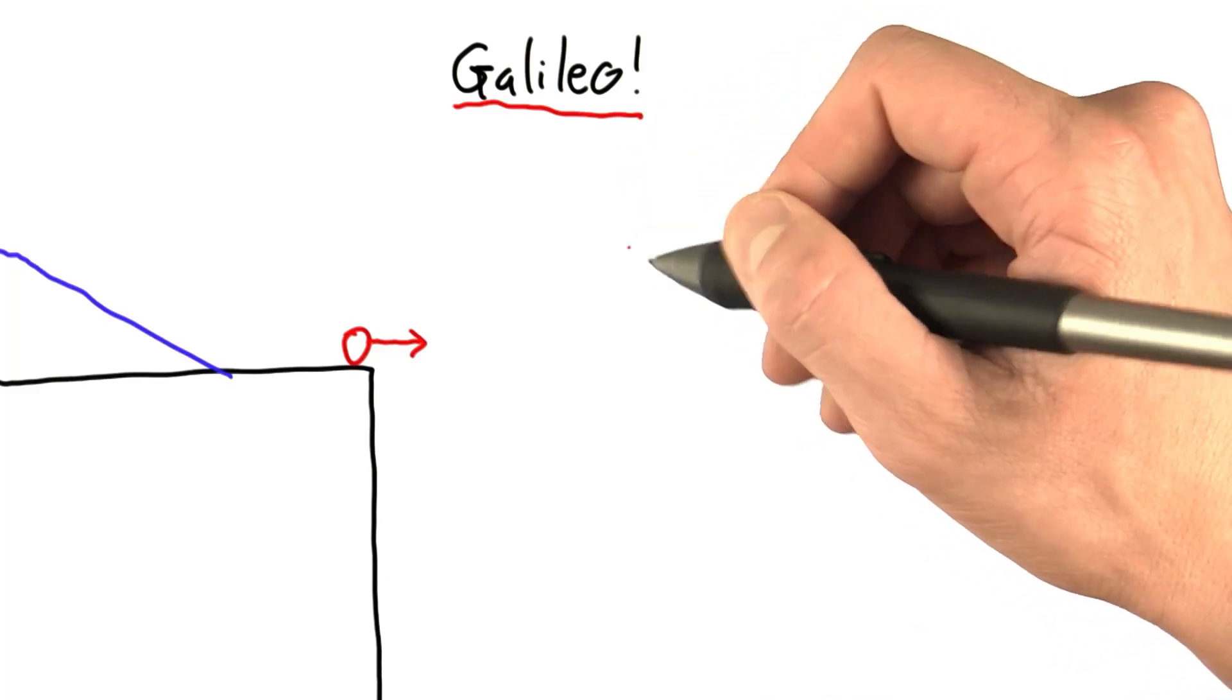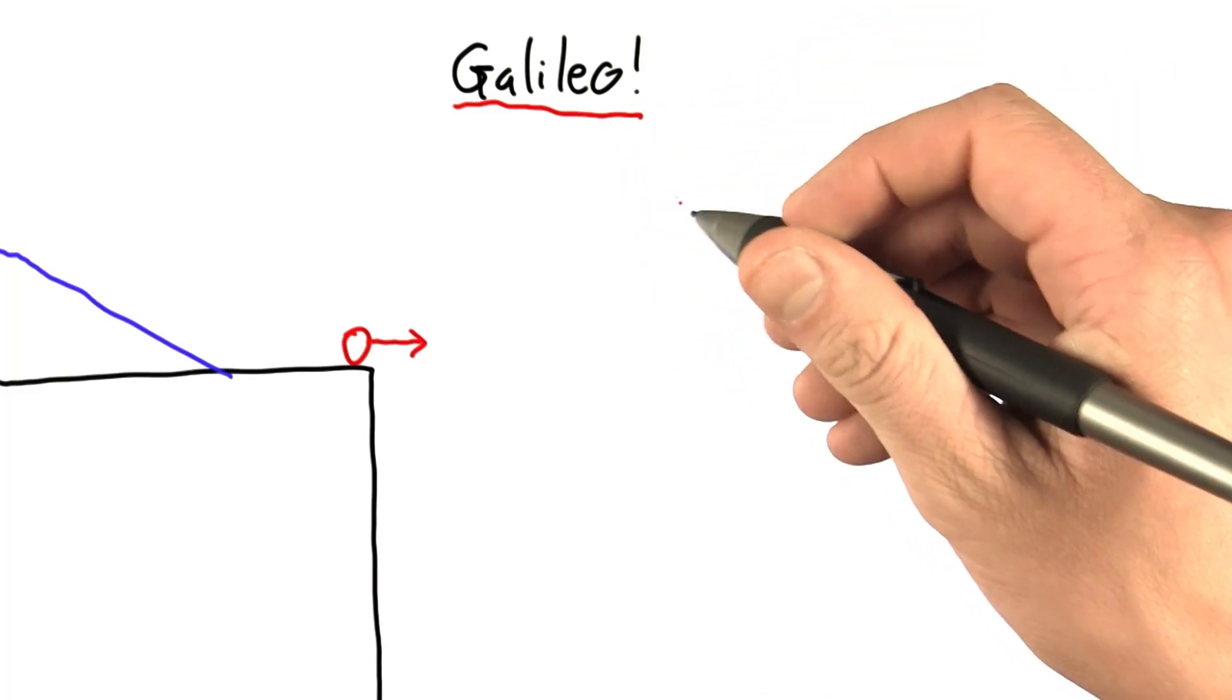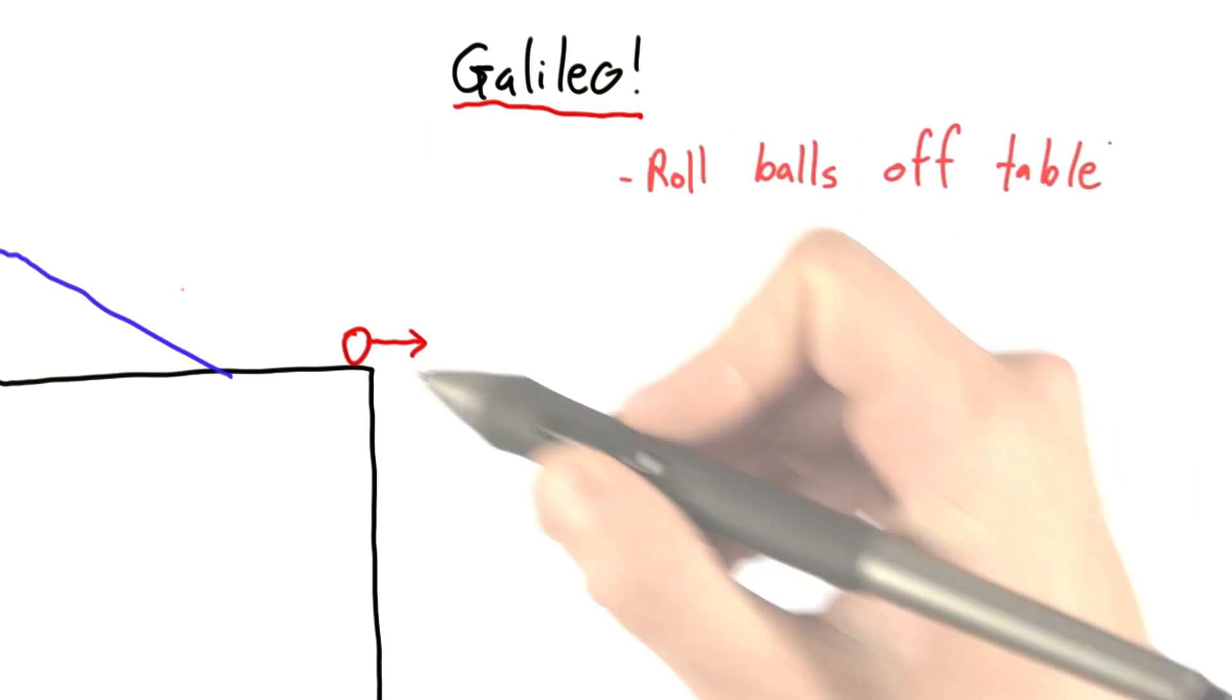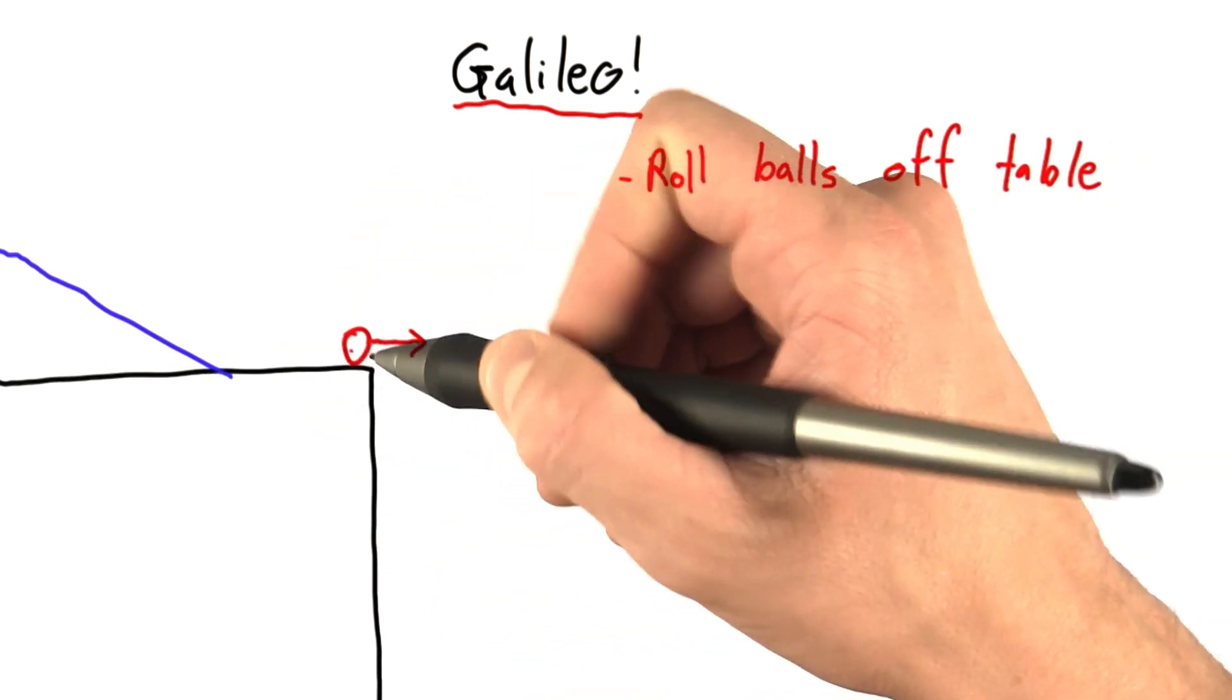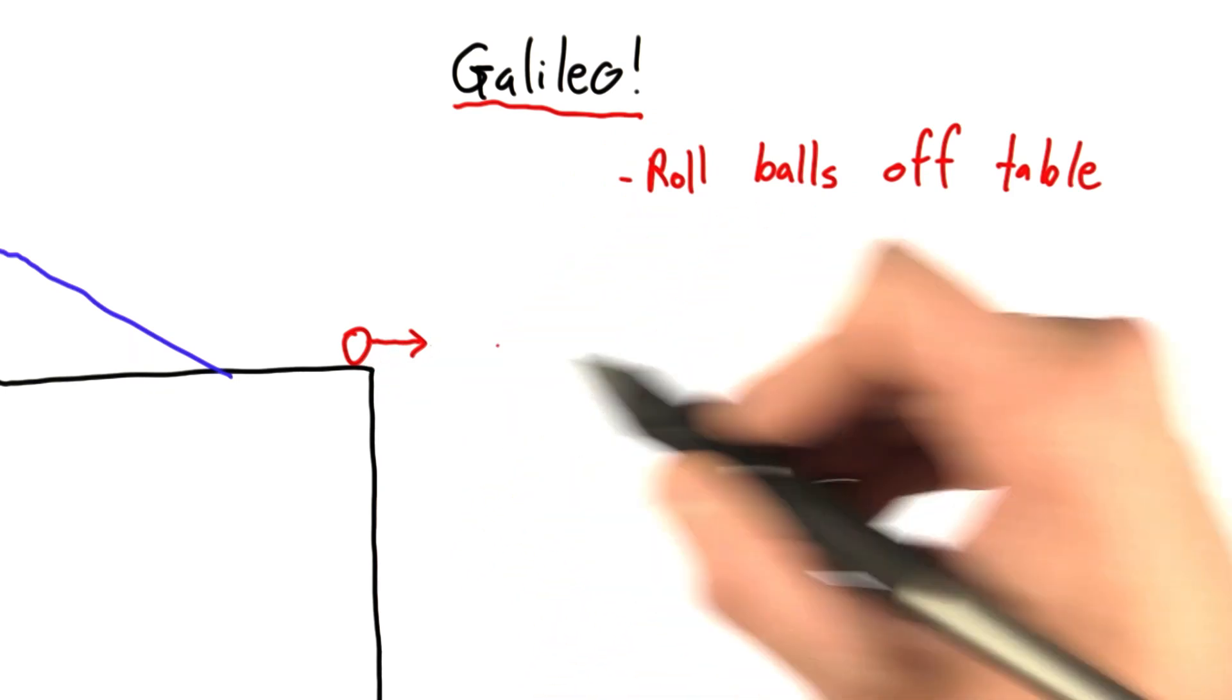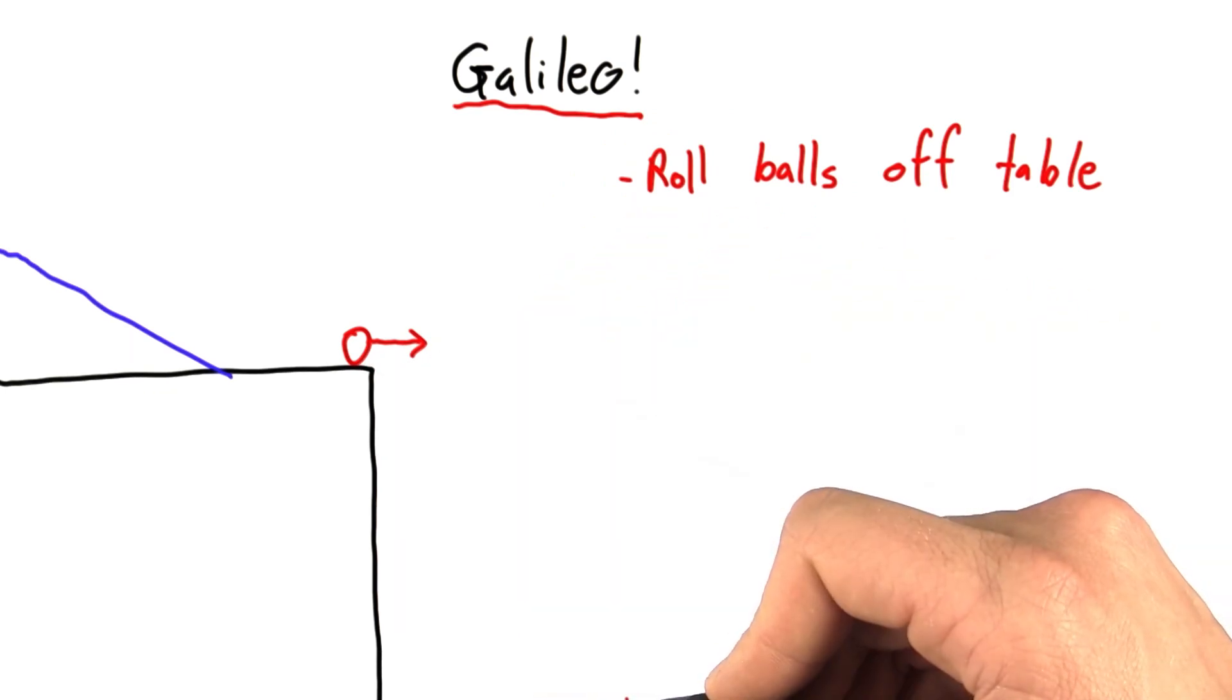So how did Galileo quantify motion in two dimensions? Well, he was a good scientist, so he did an experiment. This experiment involved rolling balls off of a table and controlling the speed with which they rolled off the table and measuring where the ball landed.